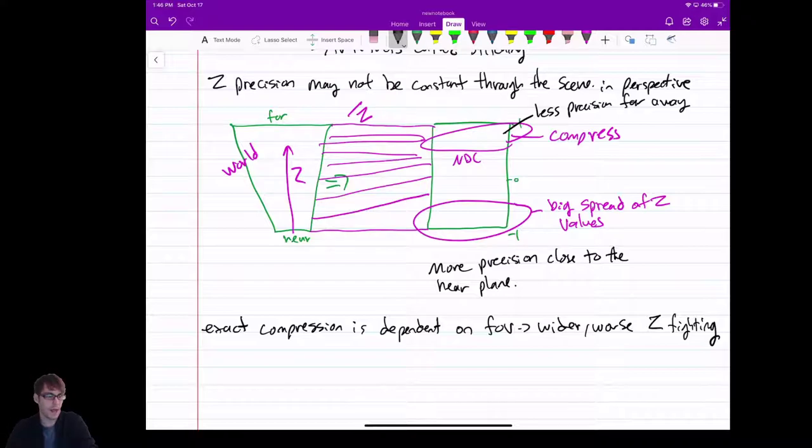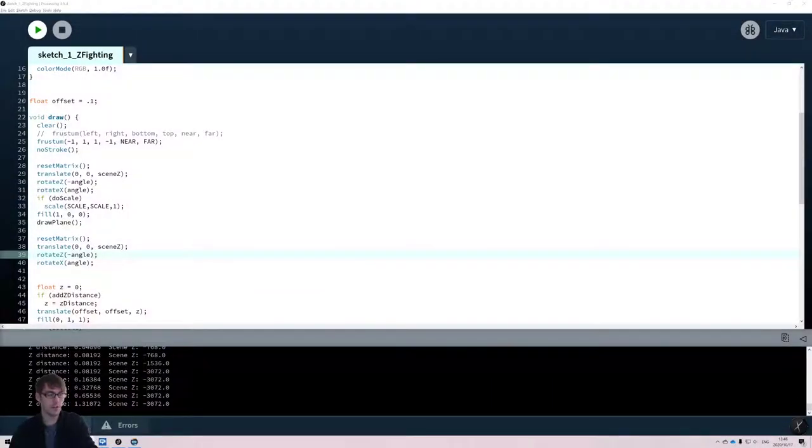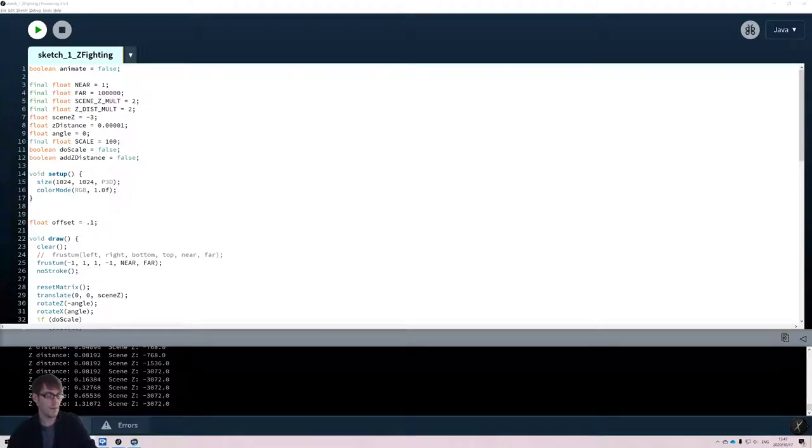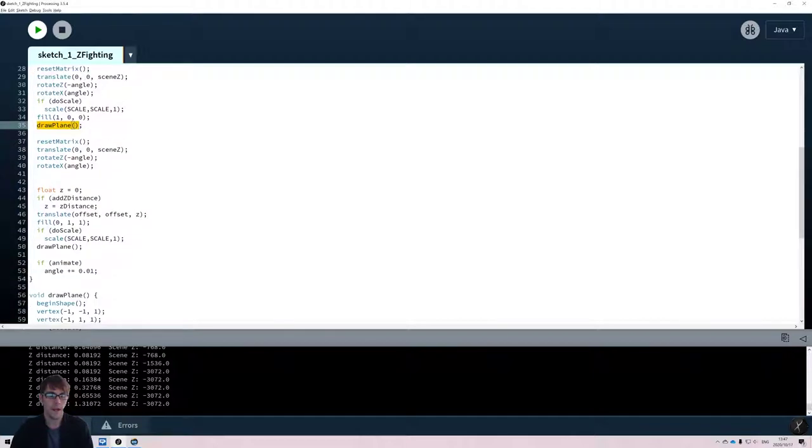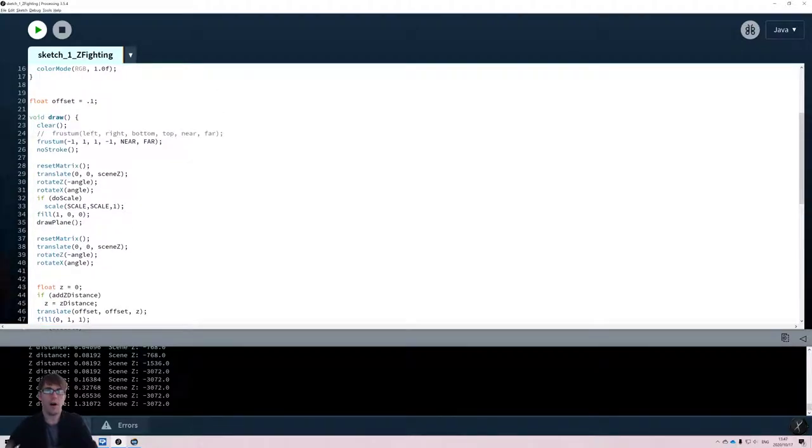So I'm going to show a demo of this. I wrote this little program. If you download this and run it, it might work differently on your computer with your graphics card. I have it tuned to my graphics card but you should be able to play with the numbers. You should be able to play with the numbers to get the same effect. So here's processing up here. I have my near plane set to 1 and my far plane set to 100,000. So I'm going really extreme with my view volume to illustrate this. I have my things drawing at negative 3. My default Z distance. I'll explain what's happening here. So go back to my draw here. I have these two planes that I'm drawing. One on top of the other.